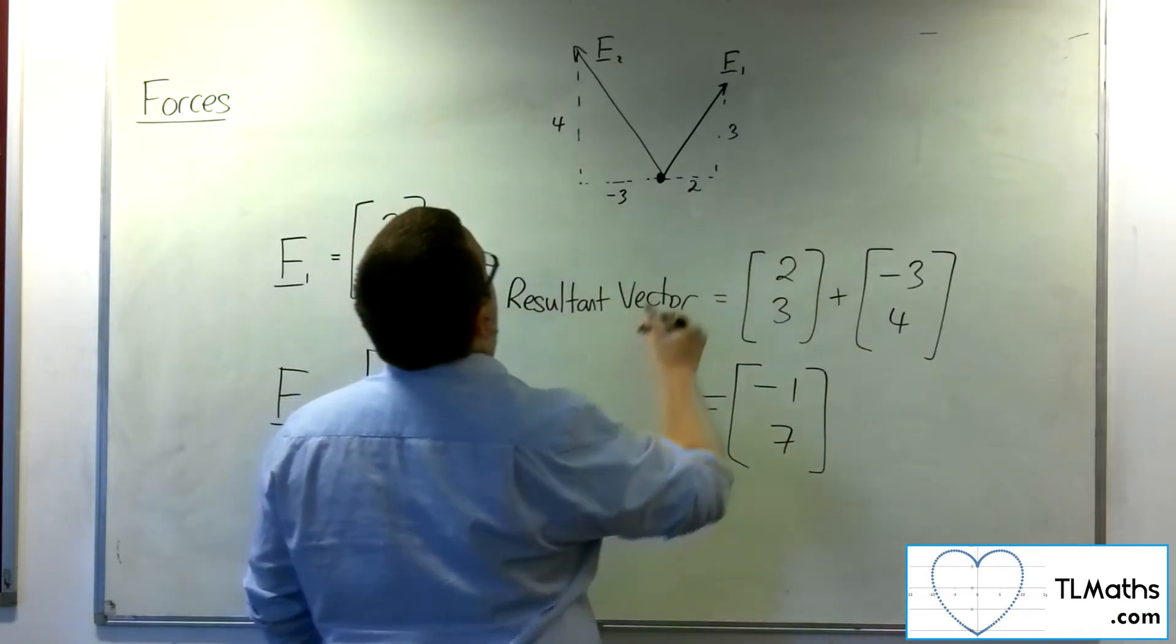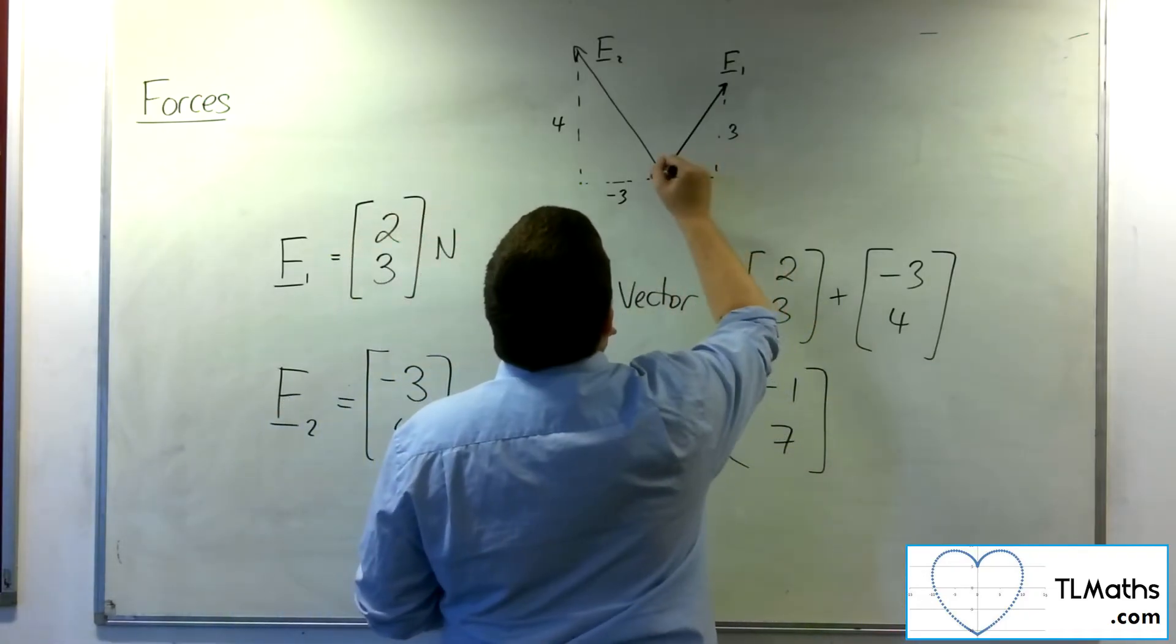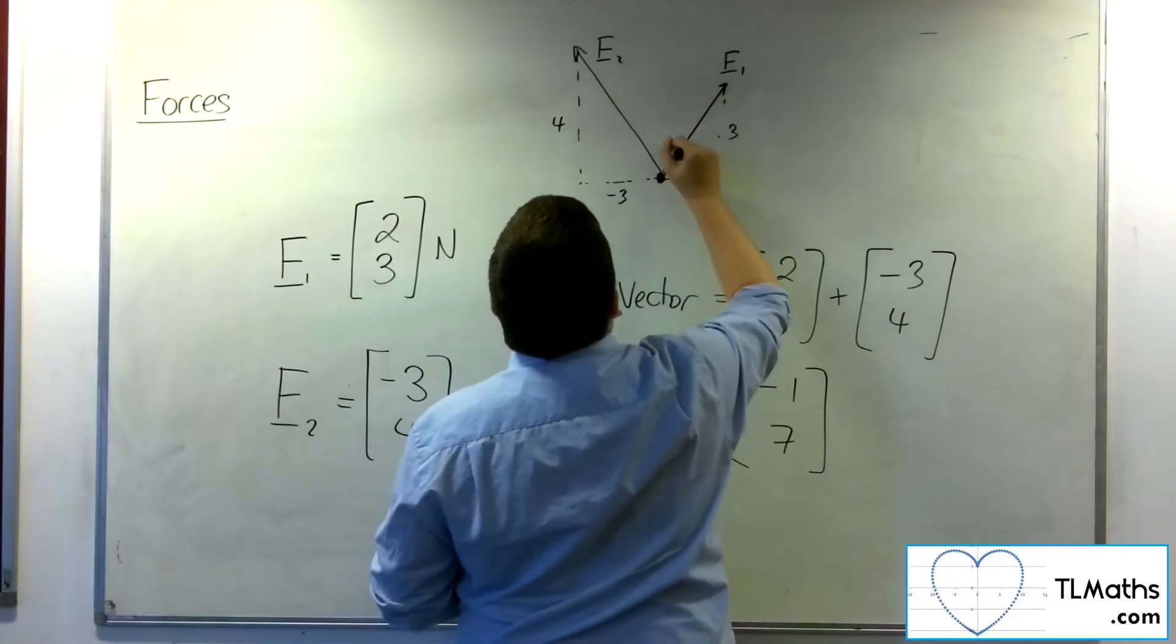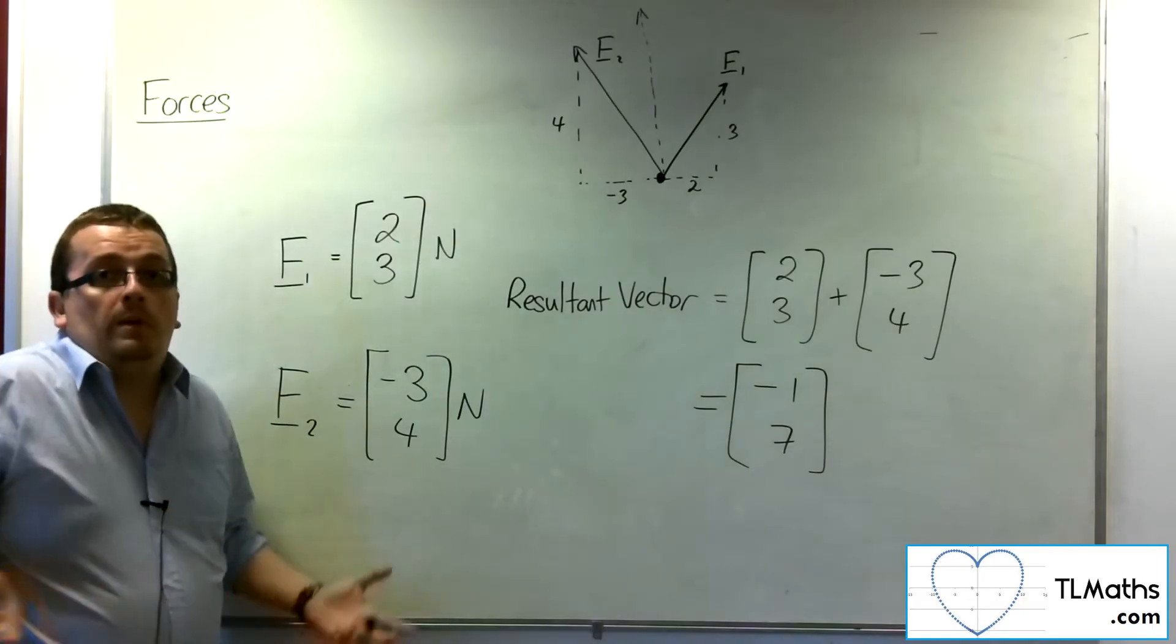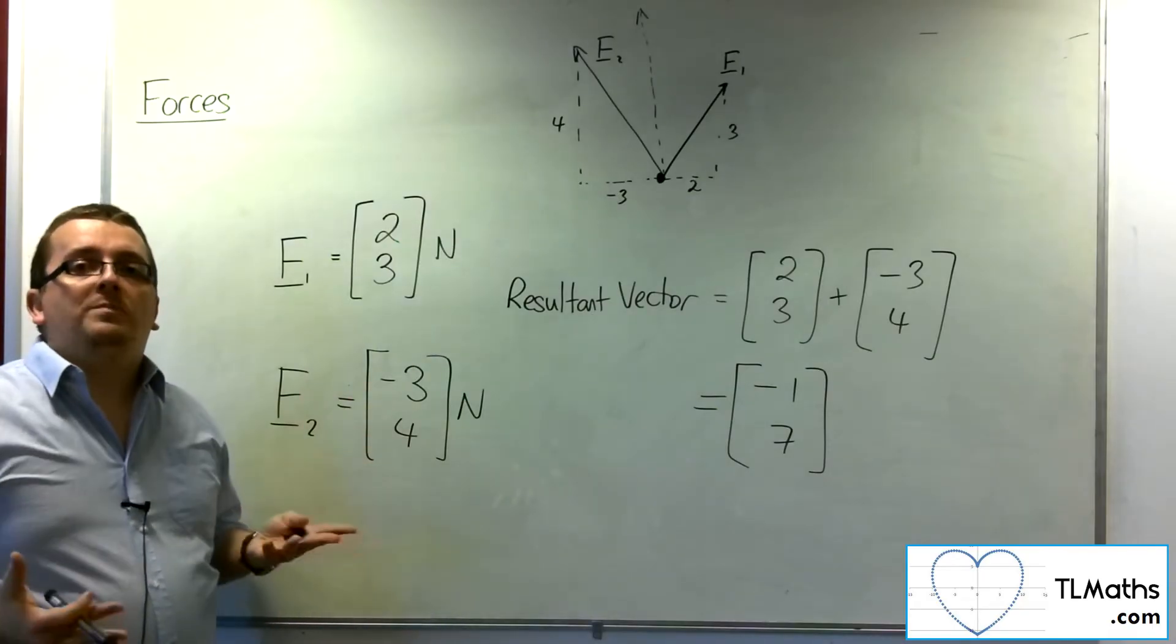And so the resultant is minus 1, 7, which is somewhere up that way. And that's the direction that we probably would have anticipated the boat to be going.